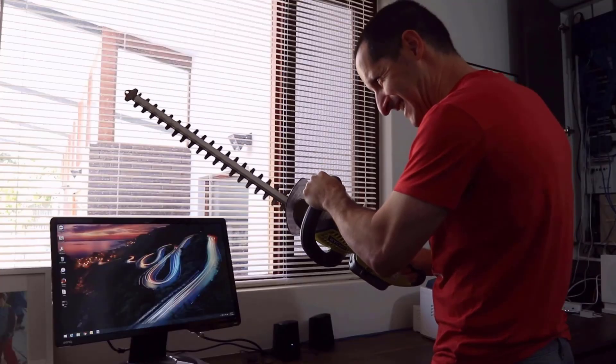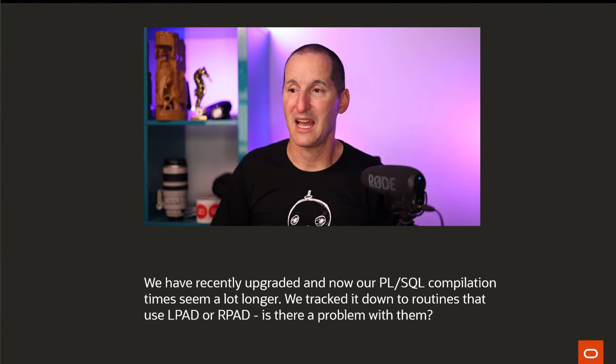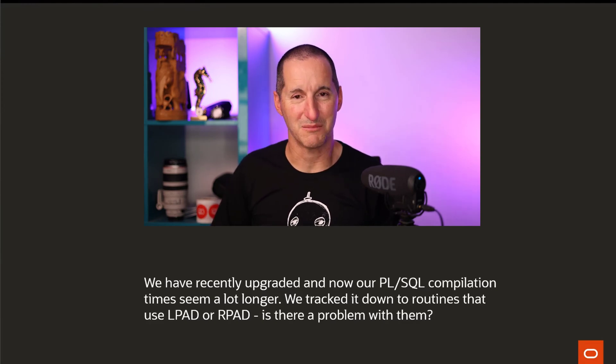I want to L-pad something, I want to R-pad something — why does it make my code so slow? Some issues with L-pad and R-pad when it came to PL/SQL. We have recently upgraded, and now our PL/SQL compilation times seem a lot higher. We tracked it down to routines that use L-pad or R-pad — is there a problem with them?